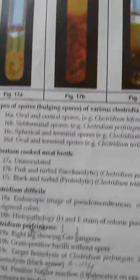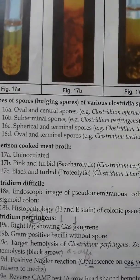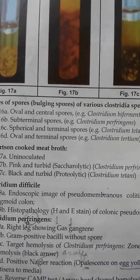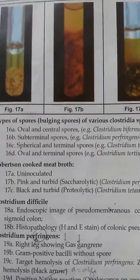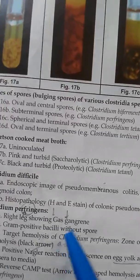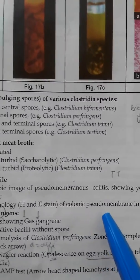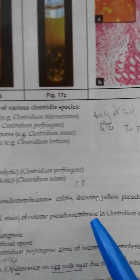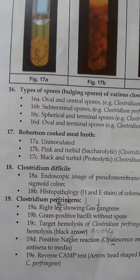Pseudomembranous colitis is usually associated with higher doses and broad-spectrum antibiotics; clindamycin is the most common culprit. For treatment, we first give metronidazole, then vancomycin. The drug of choice for pseudomembranous colitis is vancomycin. 18b is histopathology H&E stain for colonic pseudomembrane in Clostridium difficile colitis — this is a very important question.